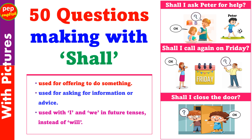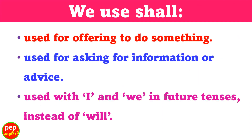50 Questions Making with Shall. We use will to express beliefs about the present or future, to talk about what people want to do or are willing to do, to make promises, offers and requests, to make predictions, and to talk about decisions.